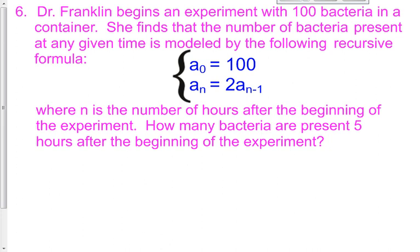At a sub 0, there's 100 bacteria. And at a sub n, it's 2 times the value of the previous term. Here is where she defines her variables.